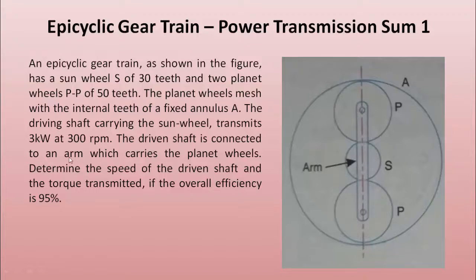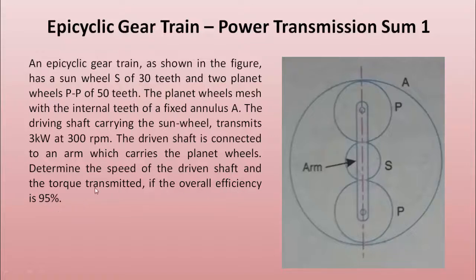The driven shaft is connected to the arm. As these planet gears rotate, the arm will also rotate, so the shaft at the center of this can be used as the output shaft. They are asking us to determine the speed of the driven shaft — that is, the speed of this arm — and what is the torque transmitted if the overall efficiency is 95 percent.